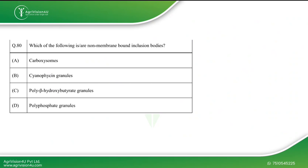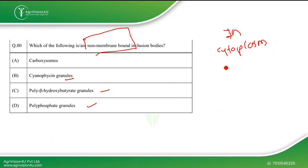The next question asks which of the following are non-membrane-bound inclusion bodies. There are membrane-bound and non-membrane-bound inclusion bodies. The correct answer is all four options — A, B, C, and D — because inclusion bodies such as carboxysomes, cyanophycin granules, poly-beta-hydroxybutyrate granules, and polyphosphate granules are not bound by any membrane; they live free in the cytoplasm as reserve materials.